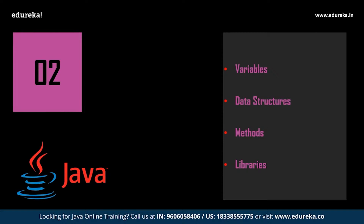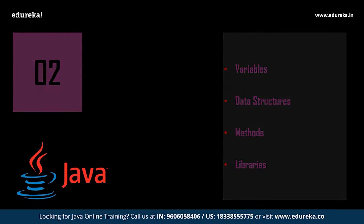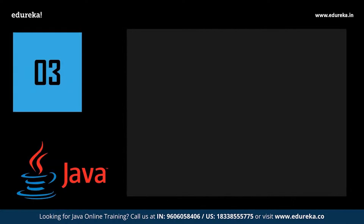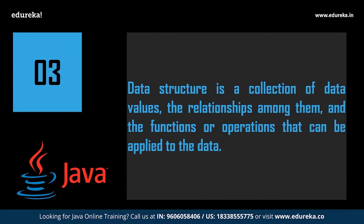Similar to the C programming language, Java also has all the similar types of variables and data types. We have integer, float, double, string, and character, to name a few. Followed by data types and variables, we have data structures. A data structure is a data organization, management, and storage format that enables efficient access and modification — a collection of data values, their relationships, and the operations that can be applied. In Java, we have arrays, linked lists, and everything similar to C.